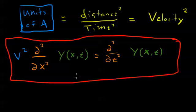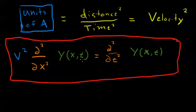This wave equation applies to a sound wave — in that case, this velocity would be the speed of sound. Or if this was light, this would be the speed of light. The wave function y will have units of whatever that wave is made of, whether it's pressure in a sound wave, or electric field in a light wave, or any other kind of wave. Light doesn't even require a medium to travel through, but whatever the wave is, v is the speed of that wave.